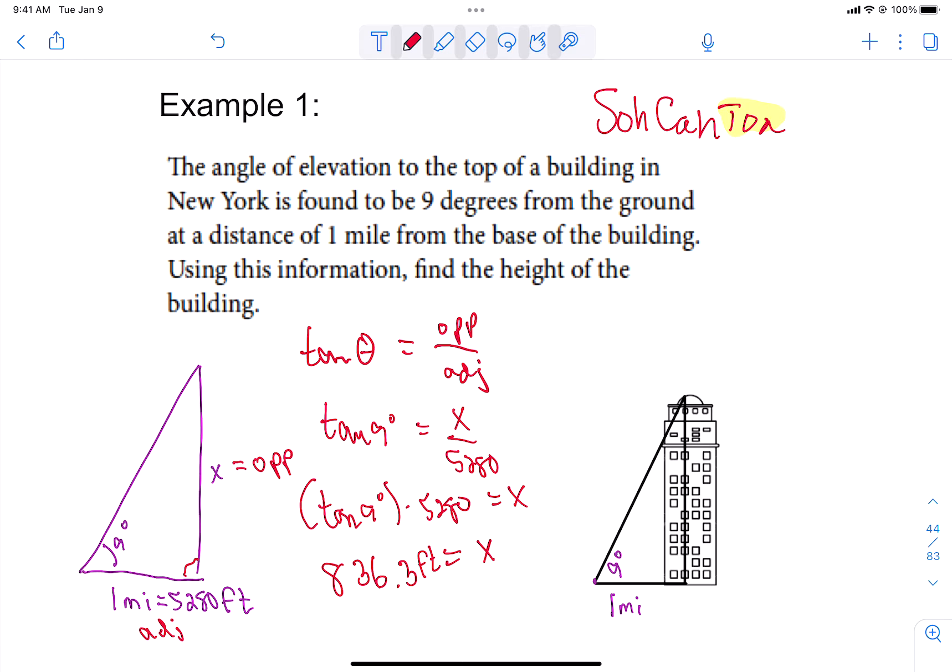So there is an example of an angle of elevation. We were below something. We were looking up to it. And tangent is used very often. It's not used all the time, but it is used often when doing problems like this.